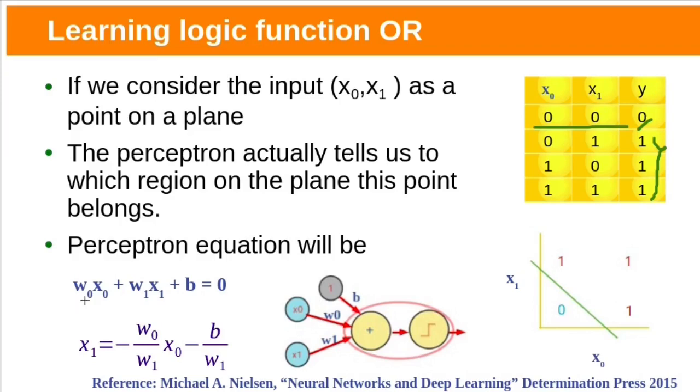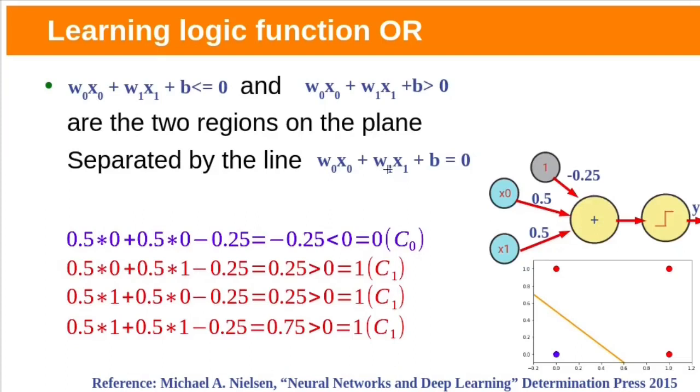The Perceptron equation will be w0x0 plus w1x1 plus b equal to 0. If we rewrite this, x1 equal to minus w0 by w1 into x0 minus b by w1, which is in the form of straight line equation. Here we have two classes. This Perceptron line will divide plane into two regions. This is class 0 and this is class 1. This Perceptron line divides the plane into two regions: w0x0 plus w1x1 plus b less than or equal to 0 is region 1 or class 0, and another region w0x0 plus w1x1 plus b greater than 0 which is class 1.